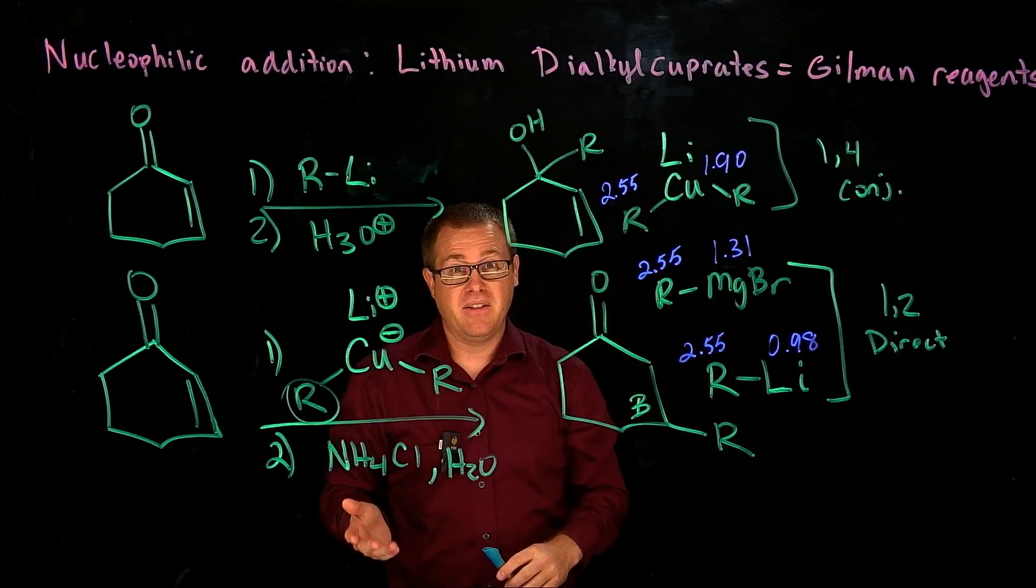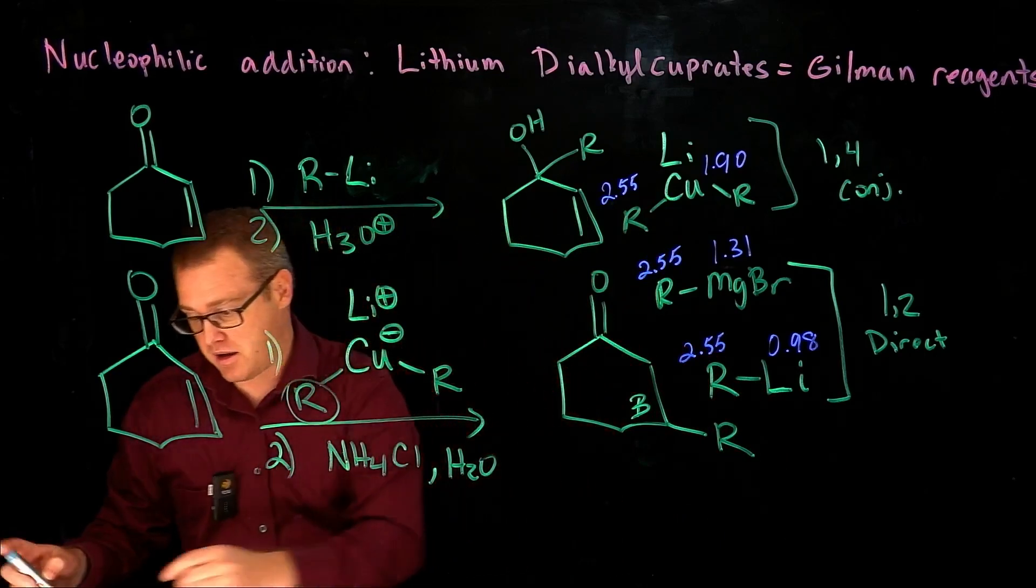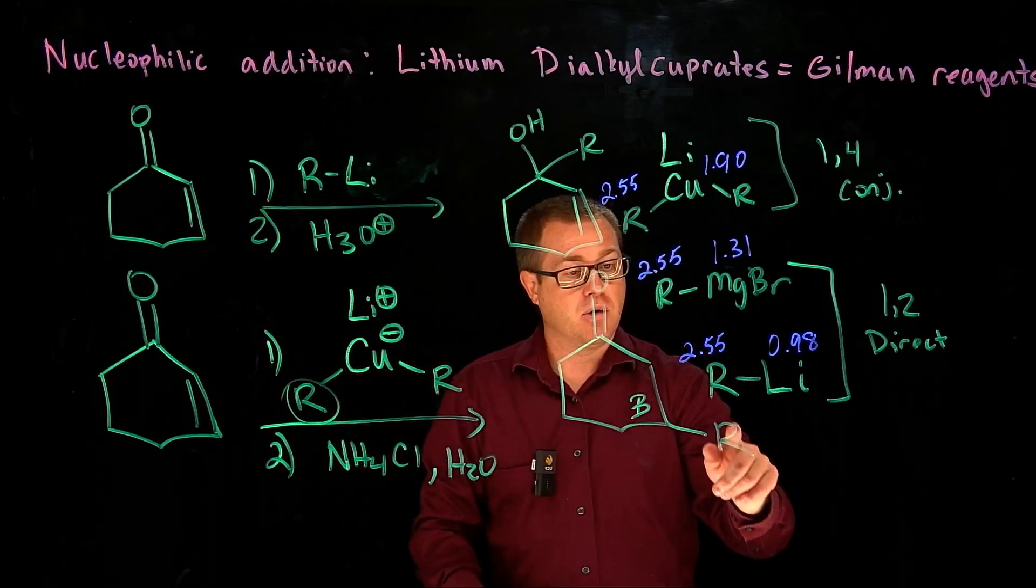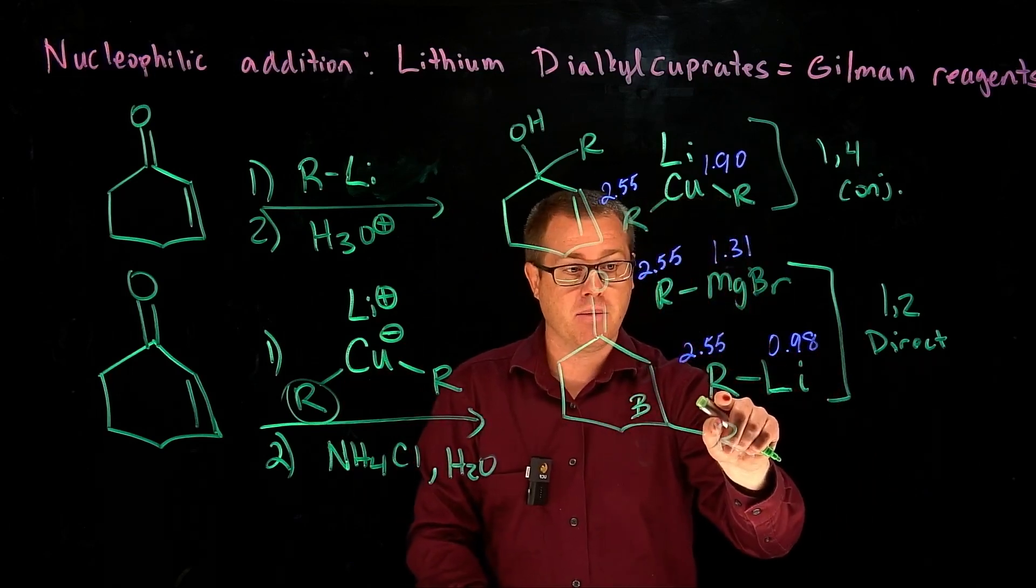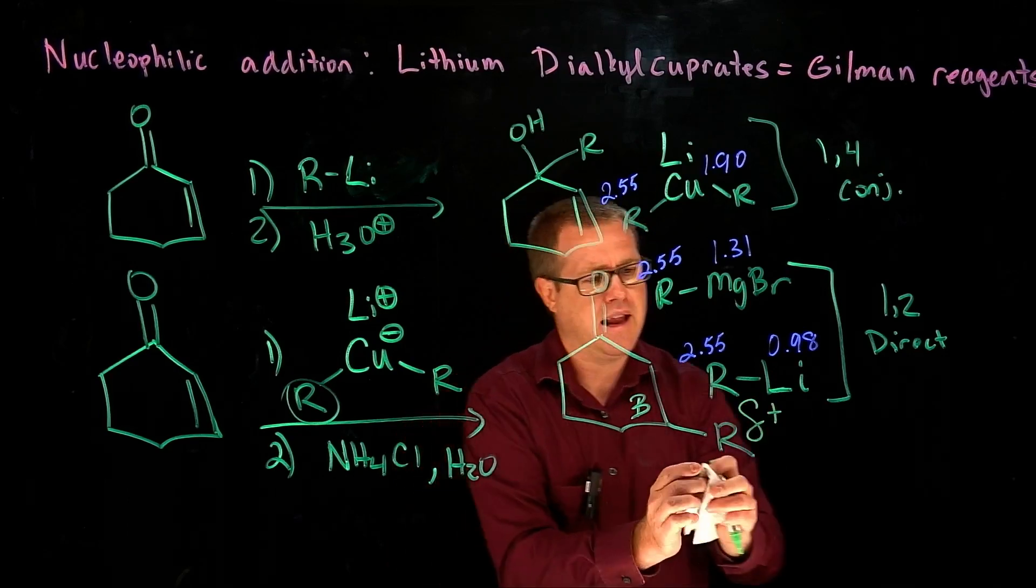And so that electronegativity difference has an effect on the reactivity. And so the consequence of this electronegativity difference is that this carbon right here is going to have a much larger partial negative.